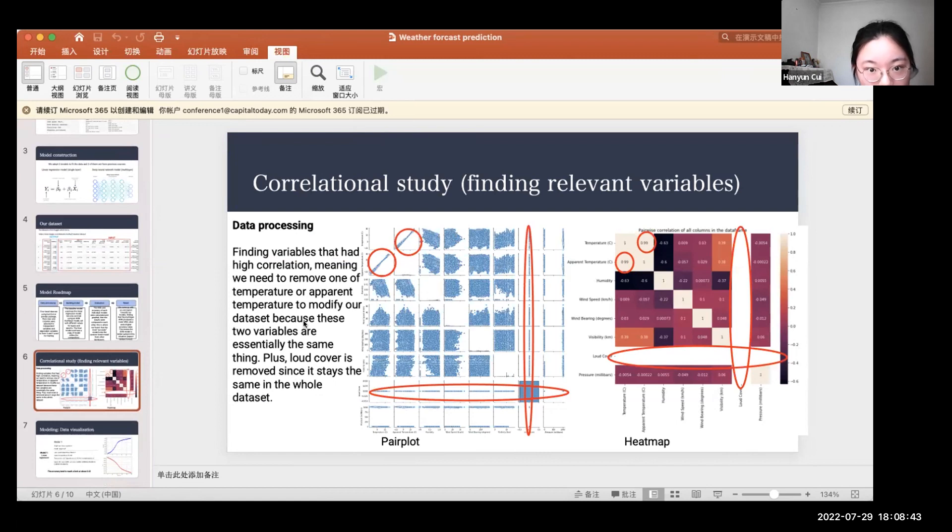This is a correlational study. It includes the pair plots and the heat map of eight different parameters. To find variables that had high correlation, this means we need to remove either the temperature or apparent temperature to modify our dataset.